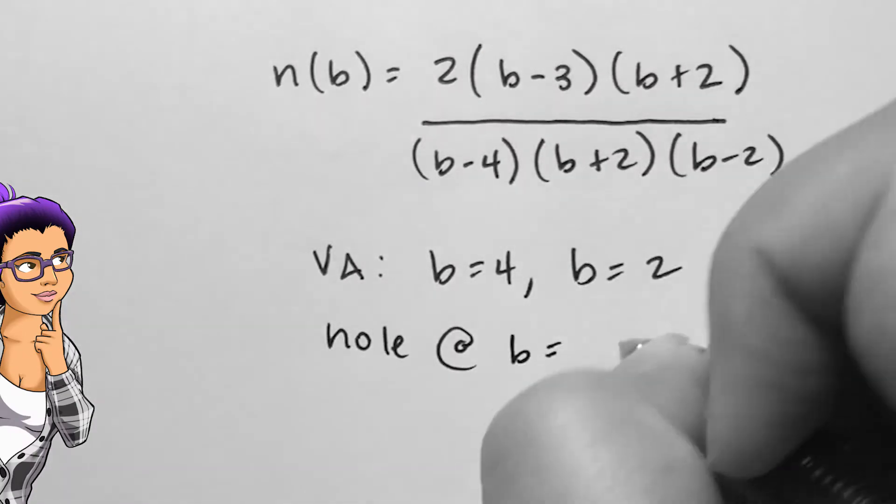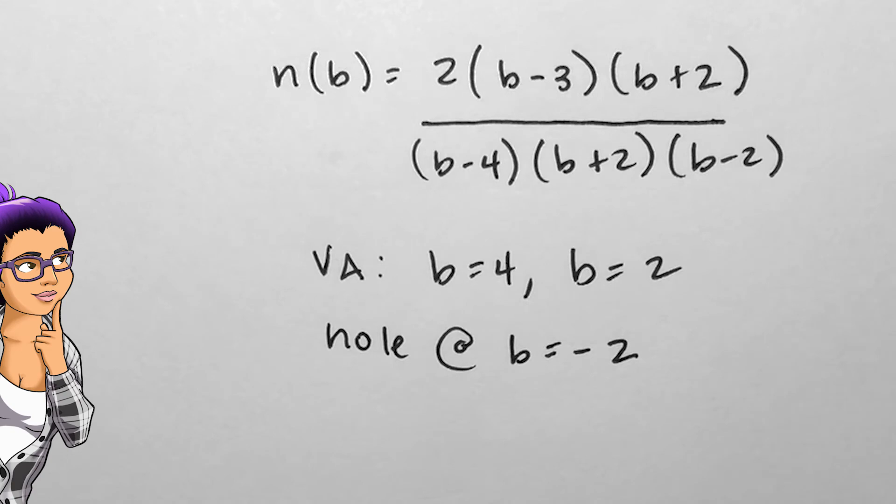I wonder what this means for the b plus 2 in the numerator. Does this mean there's an x-intercept at negative 2, or not?